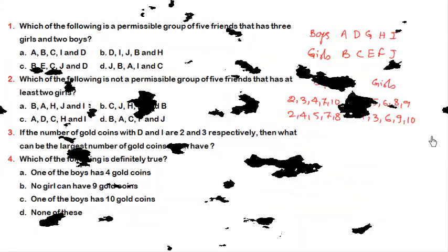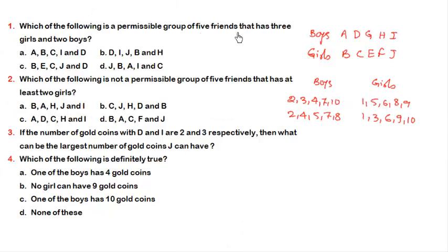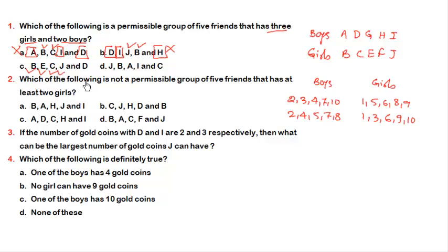Question 1 asks which is a permissible group of 5 friends with 3 girls and 2 boys. Option A has A (boy), B (girl), C (girl), D (boy) and I (boy) — three boys and two girls, so it fails. Option B has D (boy), H (boy), I (boy), J (girl) and B (girl) — again three boys, so it fails. Option C has B, C, E and J as girls with D as the only boy — four girls, so it also fails. Therefore option D is the correct answer, as it contains exactly three girls and two boys.